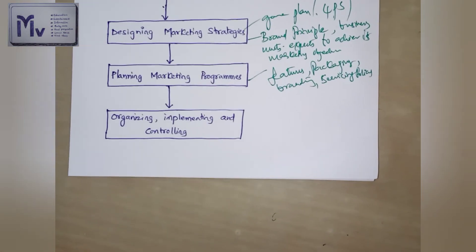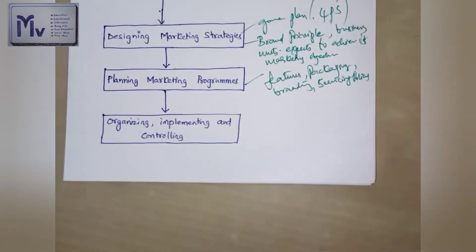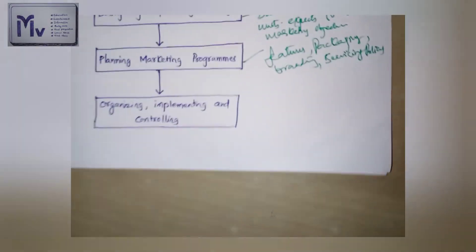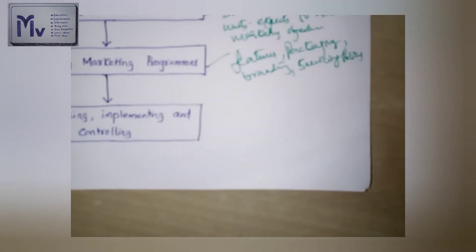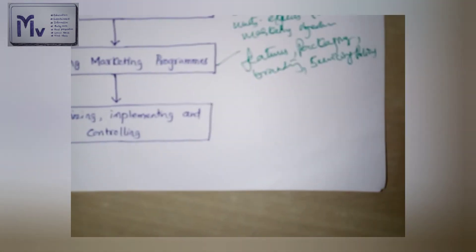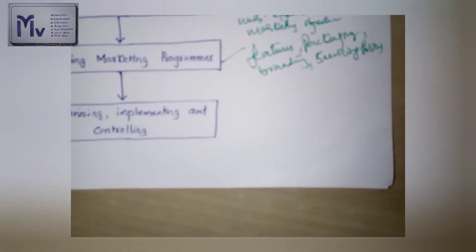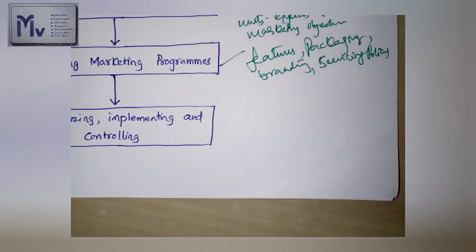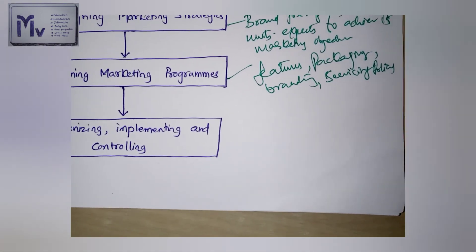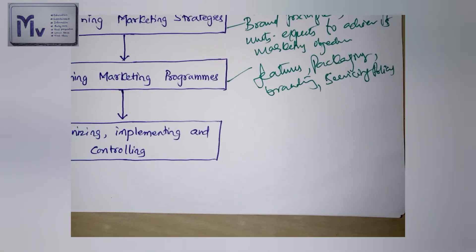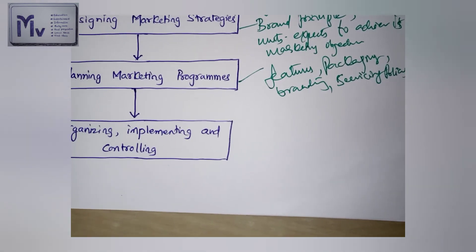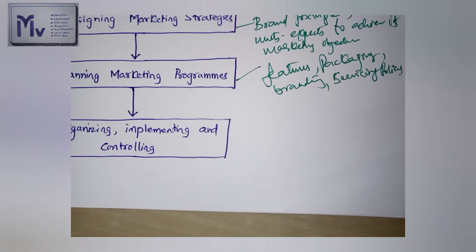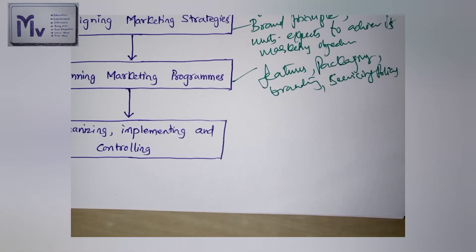The final step is organizing, implementing, and controlling the marketing efforts. This involves organizing the marketing resources, implementing the marketing plans according to the marketing objectives, and controlling the marketing activities according to the plan.